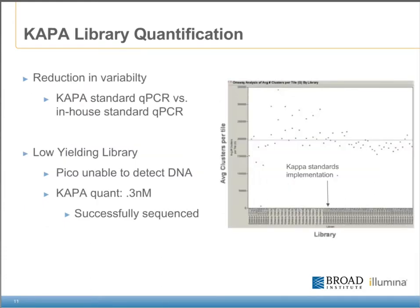Quanting our samples with automation and Kappa standards decreased the variability in cluster density. The graph on the right illustrates the average clusters per tile of libraries quanted with and without Kappa standards. The target density was 200,000 clusters per tile plus or minus 15% using RTA 1.5. Everything prior to Kappa standard implementation was all over the place, and since its implementation we have increased our ability to hit target cluster densities, which has allowed us to easily adjust as newer versions of RTA roll into production. We have also had success quanting low-yielding libraries — one example being a sample we were unable to quant using PicoGreen due to very low concentration. With qPCR, we were able to detect amplifiable DNA fragments and successfully load and sequence the sample.